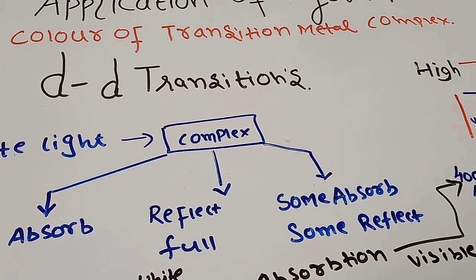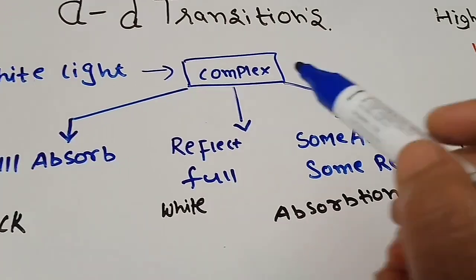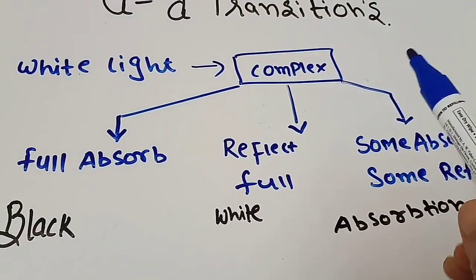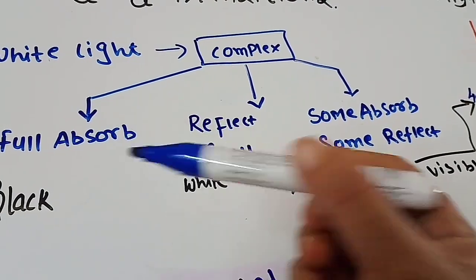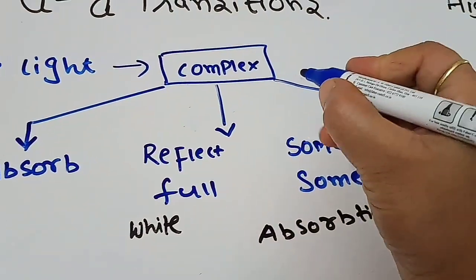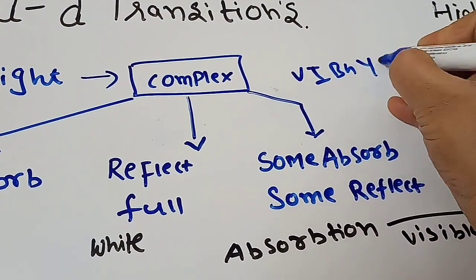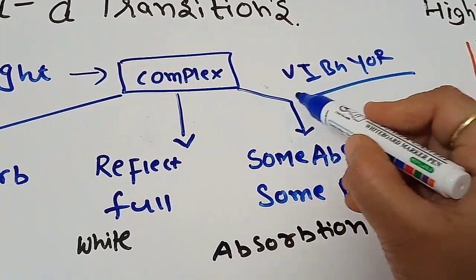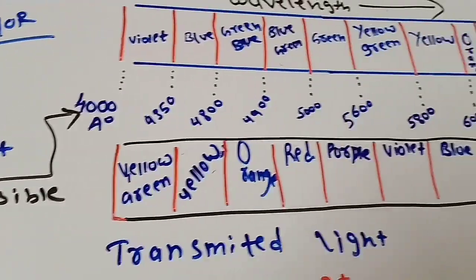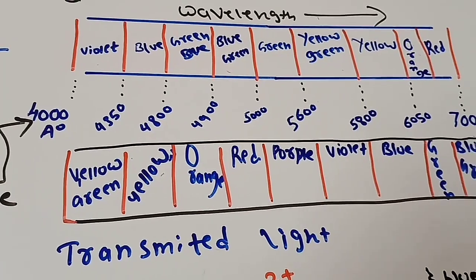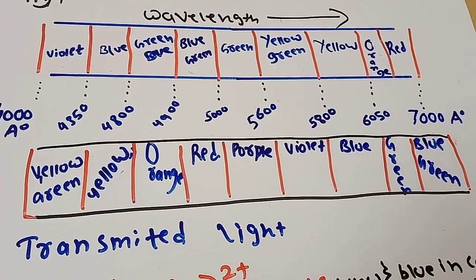When any complex absorbs light, we know that white light is composed of 7 colors — VIBGYOR: violet, indigo, blue, green, yellow, orange, and red. The wavelength range lies from 4000 Ångström to 7000 Ångström.